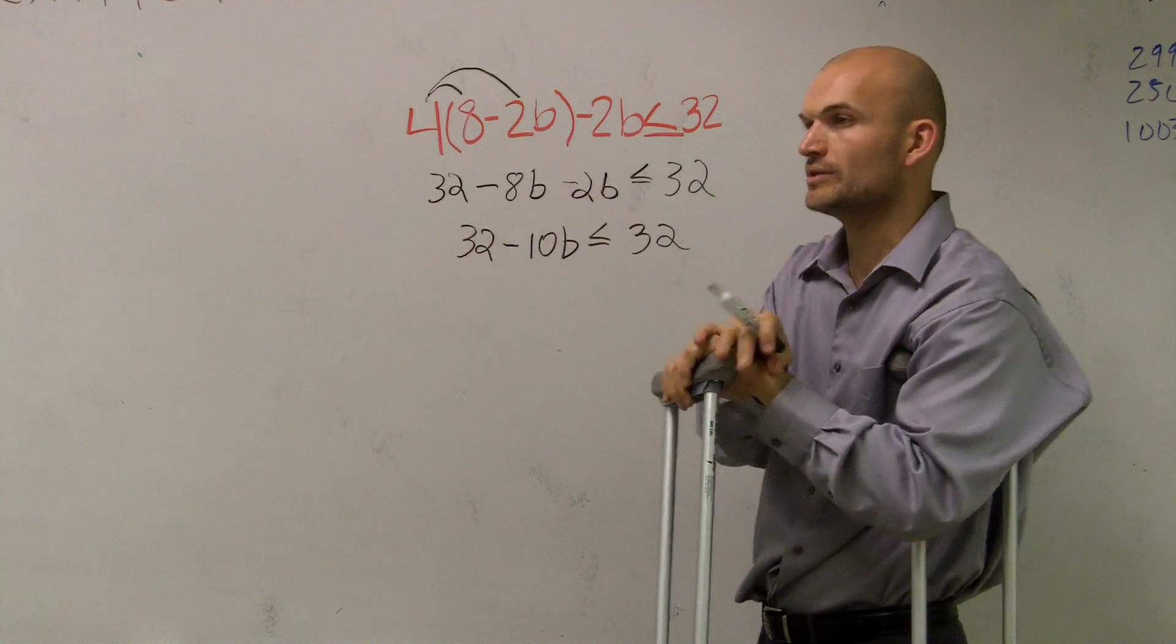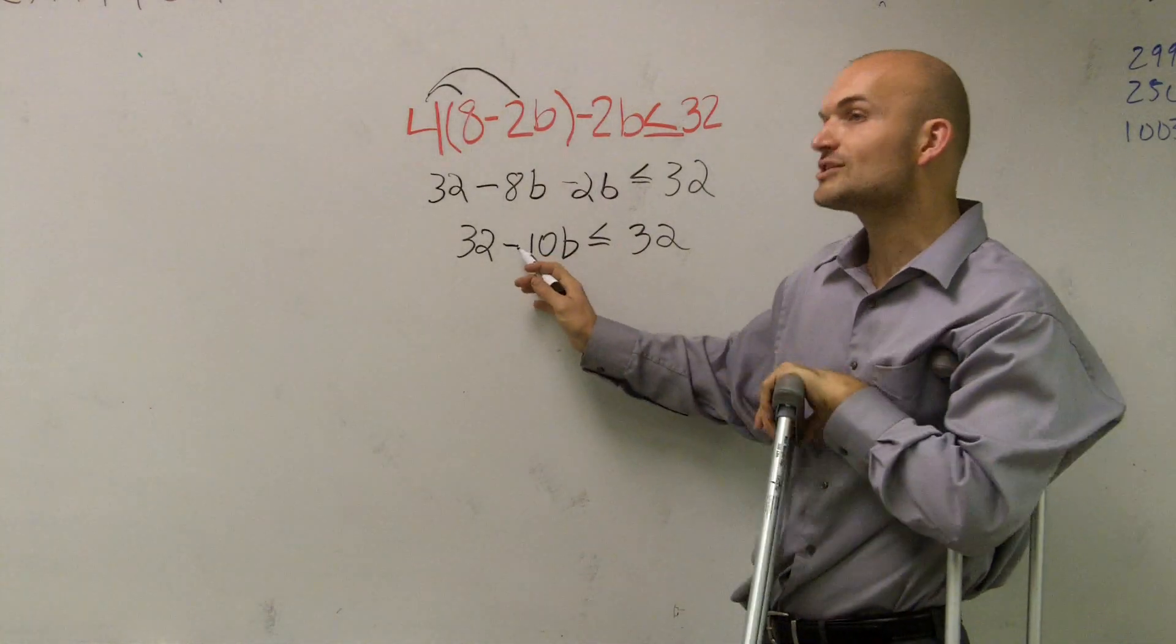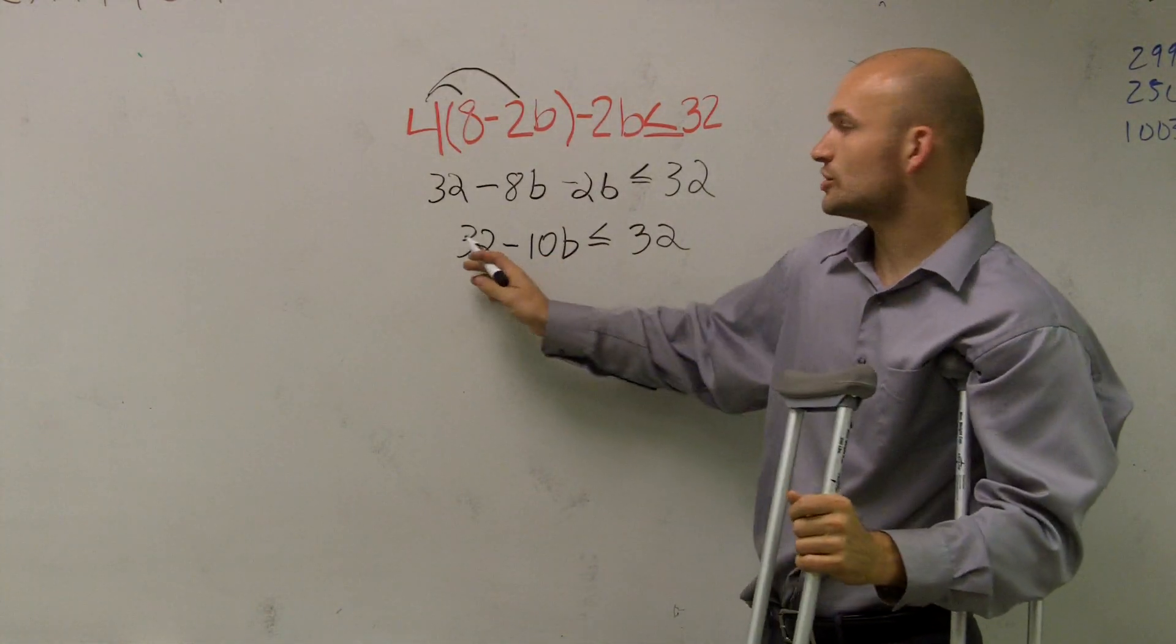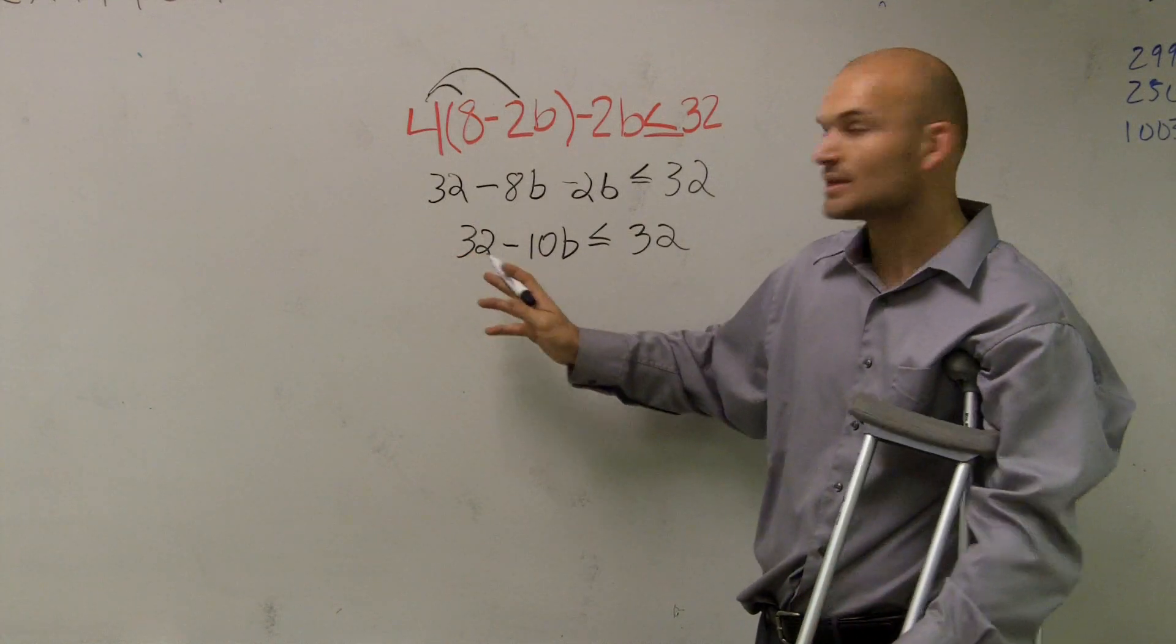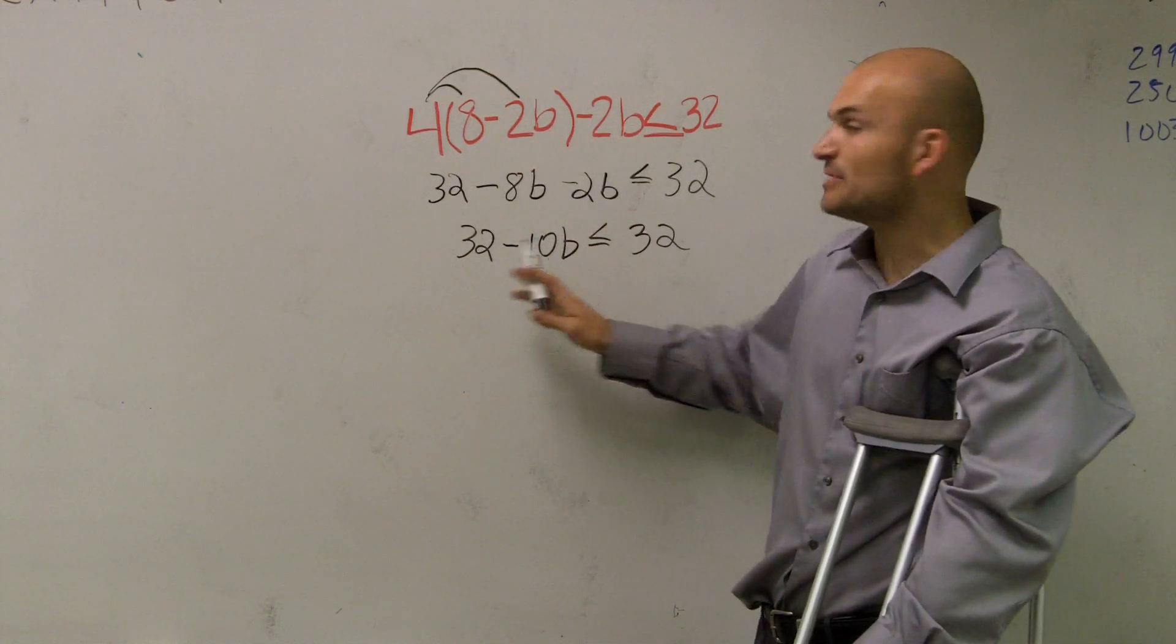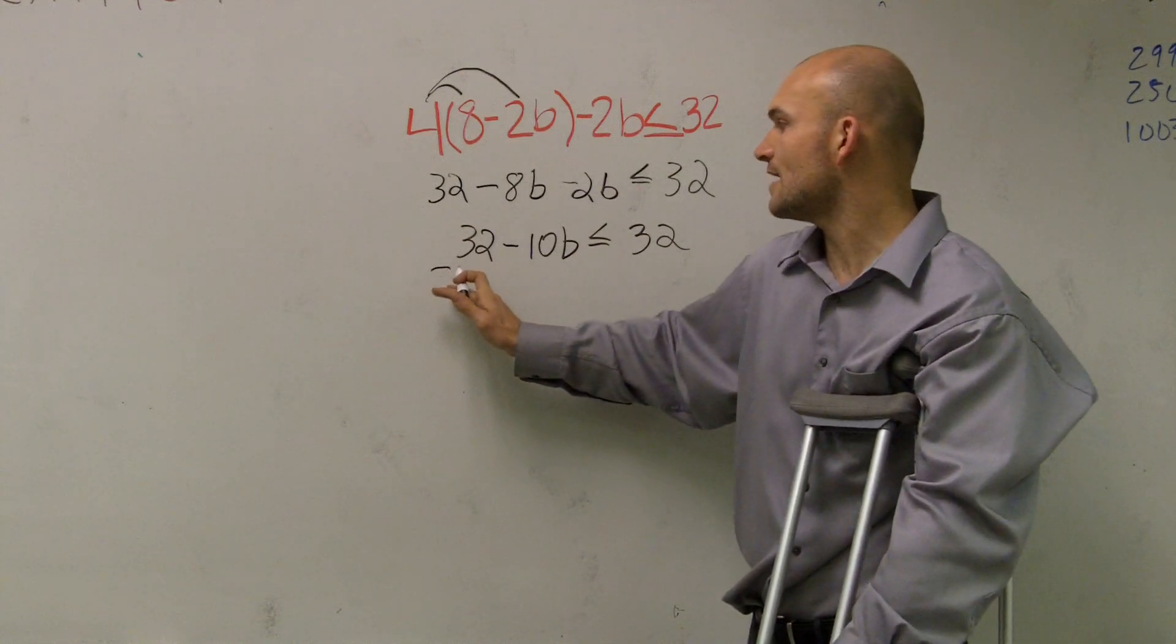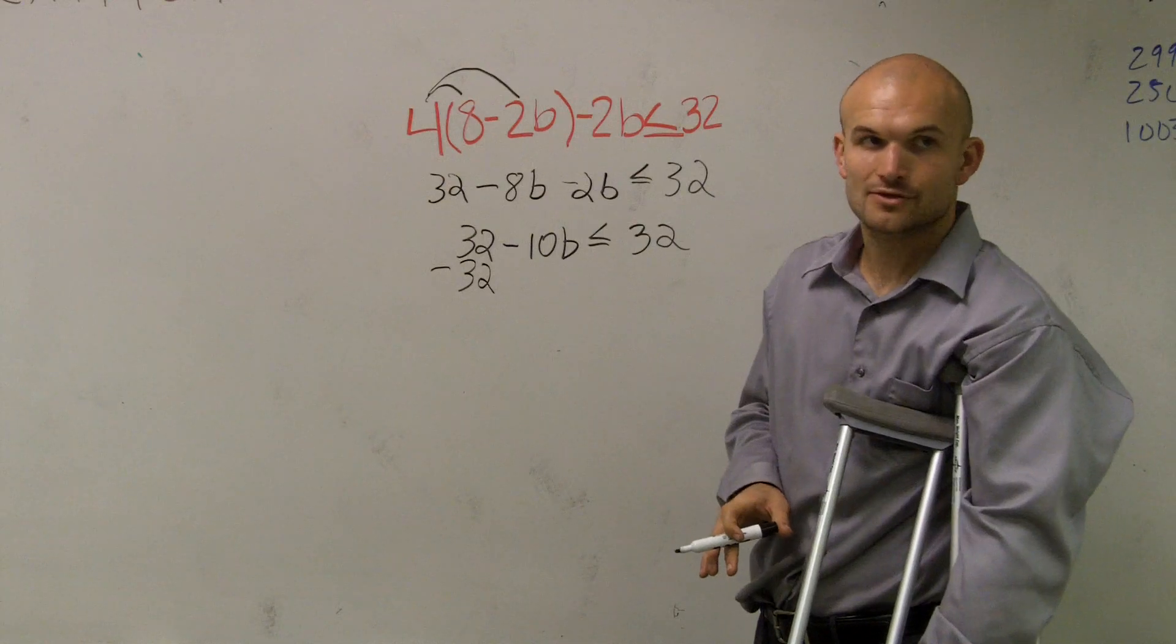So you say, well, what is the 32 doing? We say, oh, it's subtraction. Why is it subtracting? Well, because there's a subtraction sign. Remember, the operation that a number is doing is going to be the sign in front of the number, not behind it. So 32 is adding to my variable b. Why is it adding to variable b? Because this is a positive 32. So to get rid of a positive 32, I need to subtract 32.